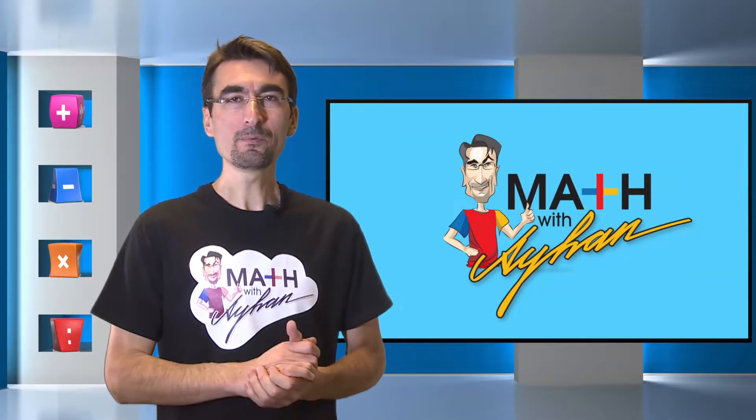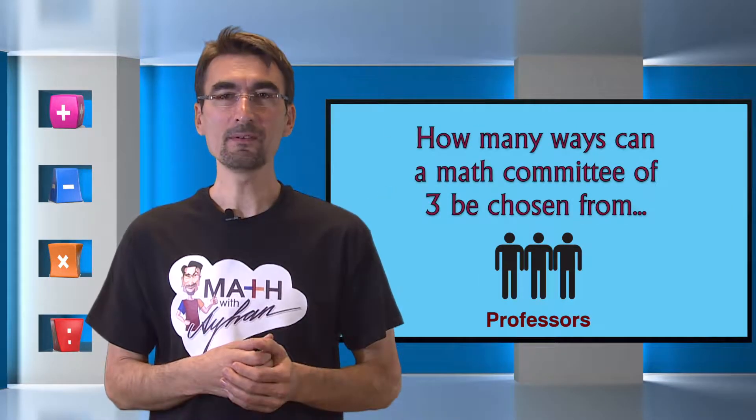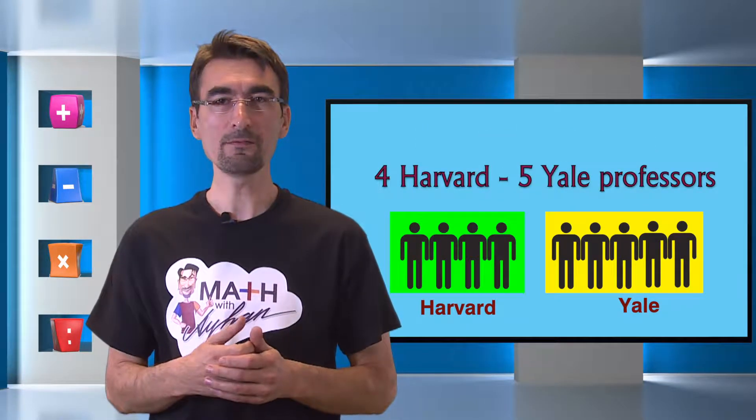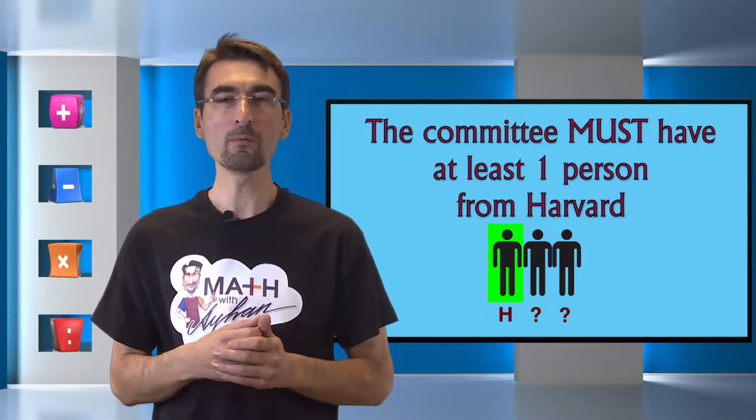This week we are going to be solving a problem with counting principles and combinations. In how many ways can a math committee of three be chosen from a group of four Harvard and five Yale professors if the committee must have at least one person from Harvard?